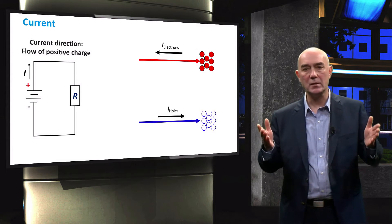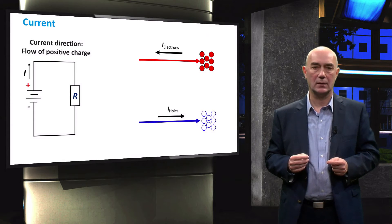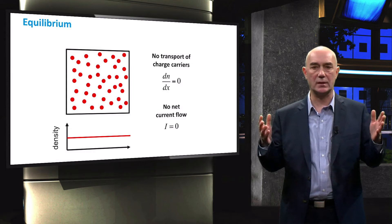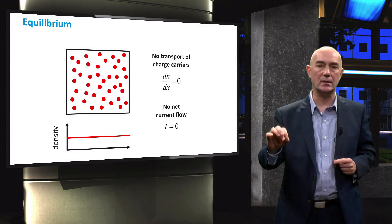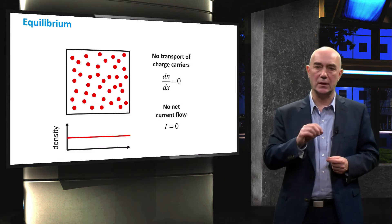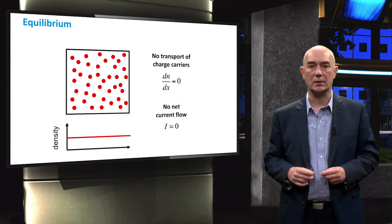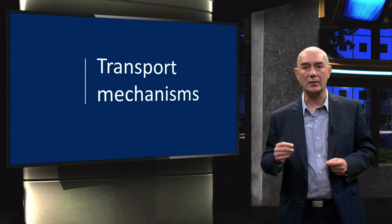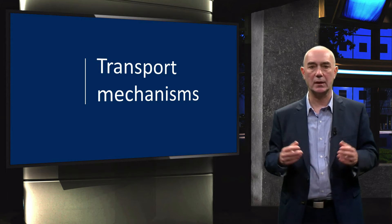Current will always be opposite to the movement of electrons and will go in the same direction as the flow of holes. To begin the discussion regarding the motion of charges, let's start with the simple case of a system in equilibrium. In equilibrium, charges are spread all over the solid and their density is ideally constant as a function of position. This means that there is no driving force for these carriers to move in the lattice in a certain direction. As a result, no net current flows. However, with solar cells we need to understand how semiconductors work when they are not in equilibrium.